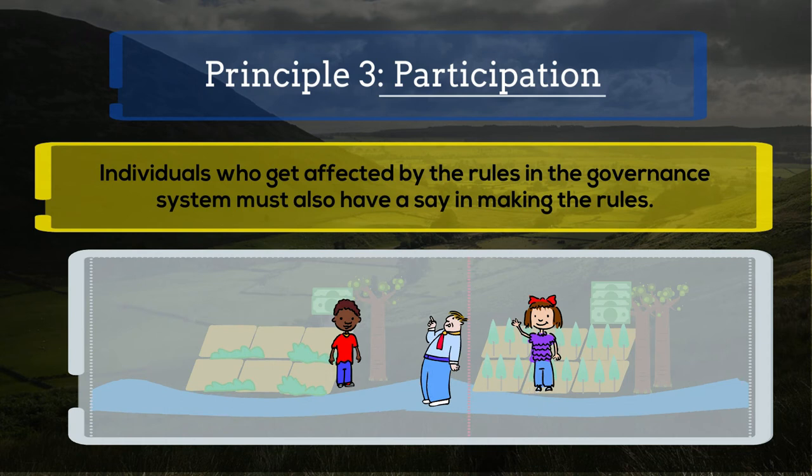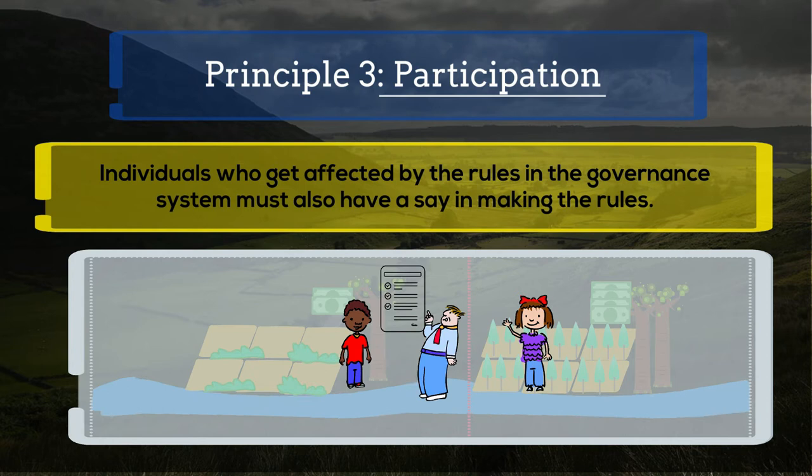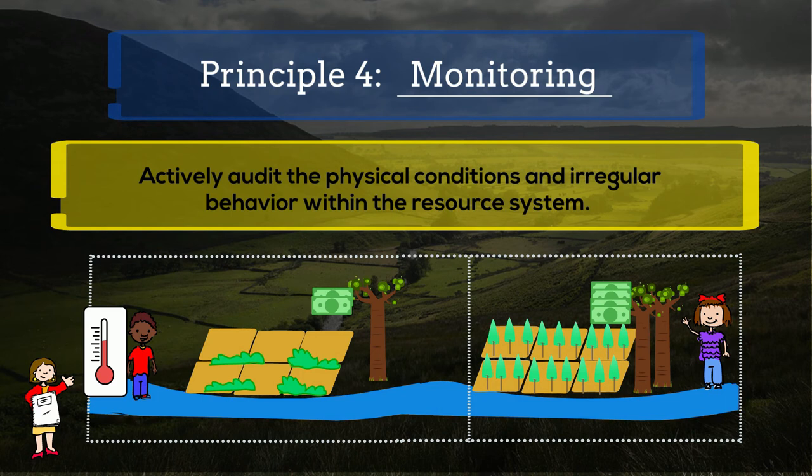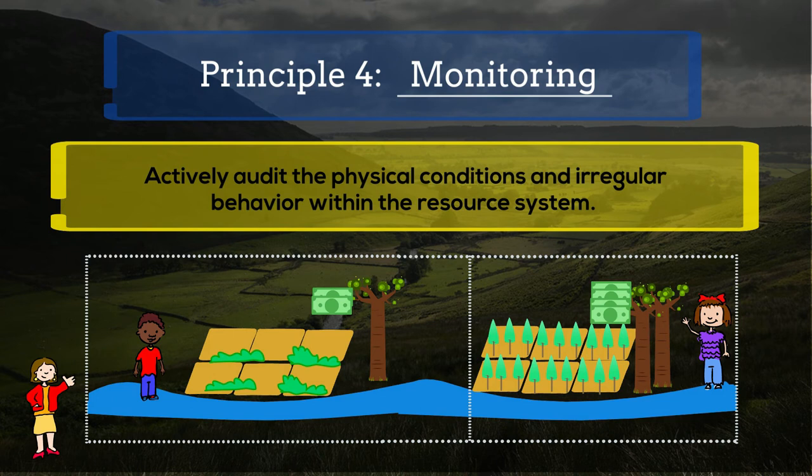Principle 4: Monitoring of activities. Management of common pooled resources becomes easier when people have continuous and accurate information about the physical conditions of the resource and about the activities and irregular behaviors of other individuals. But it is important that the monitors of the system are also accountable to the users of the system, or are users themselves.